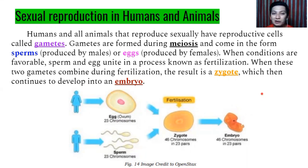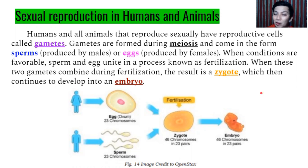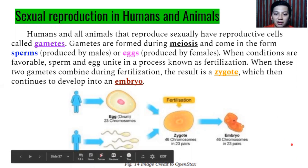Internal fertilization means fertilization happens inside the organism. In external fertilization, it happens outside. For example, some fish and frogs release their sperm and egg cells directly into the water, where the egg and sperm cells meet — that is external fertilization.